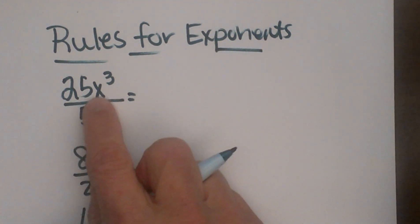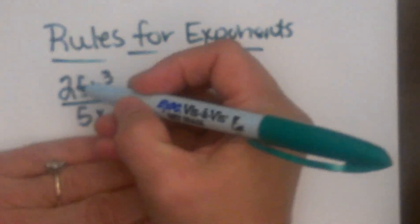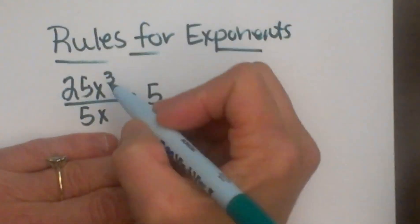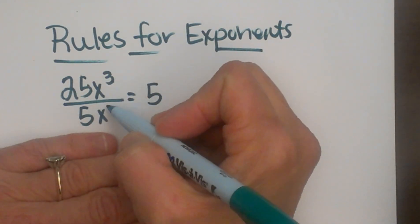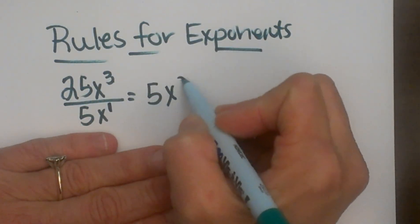Okay, so we have 25x³ divided by 5x. All we are going to do is divide our coefficients, so 25 divided by 5 is just 5, and then x³ divided by x to the—and there is a first here, we just don't write it—is x².